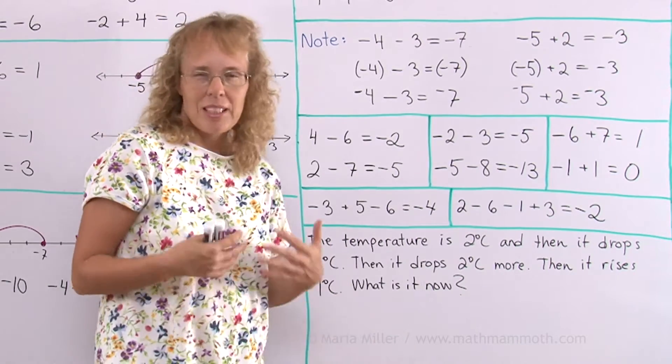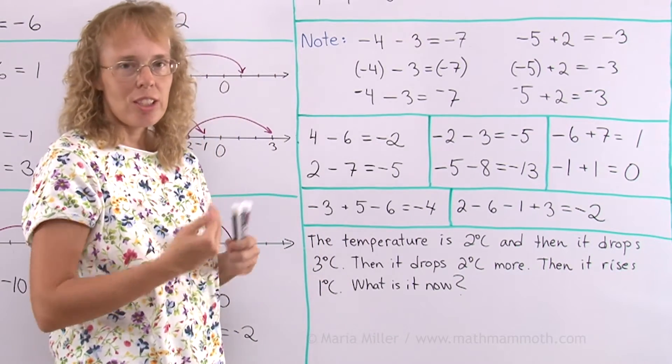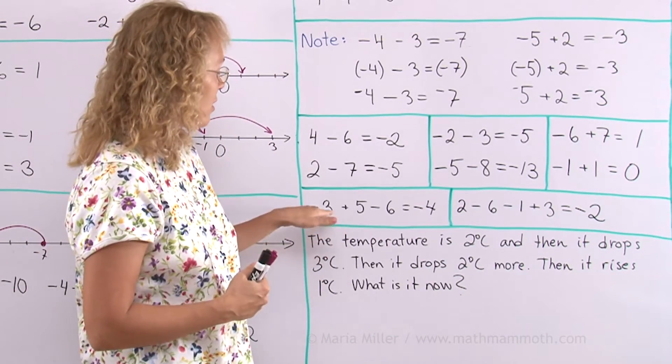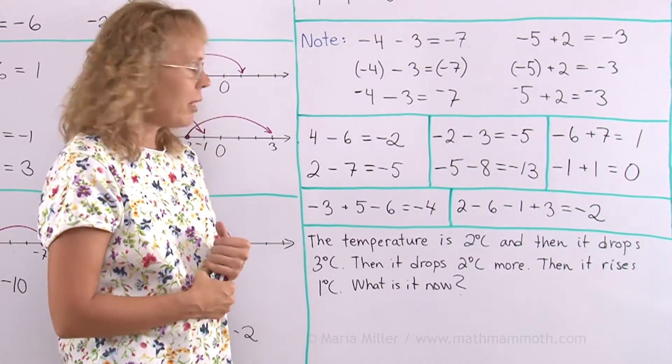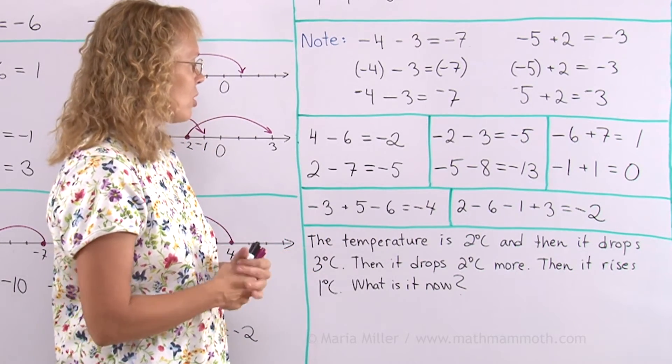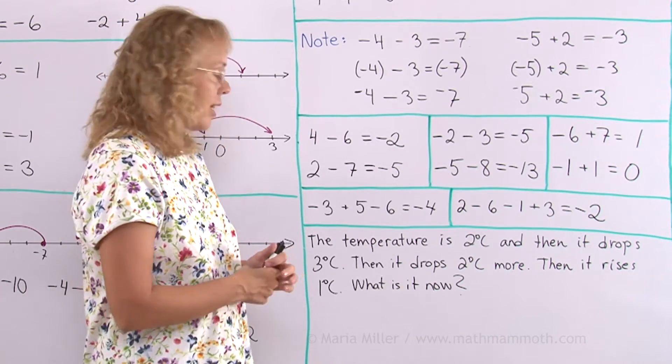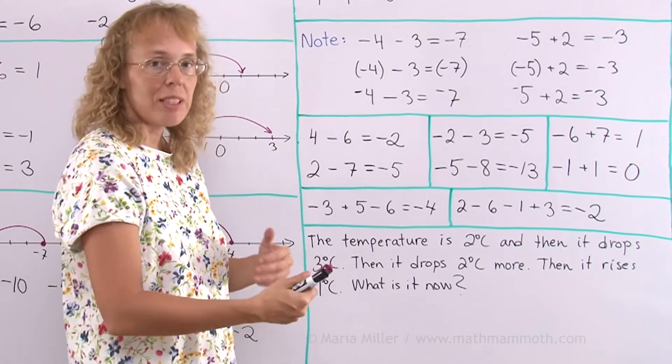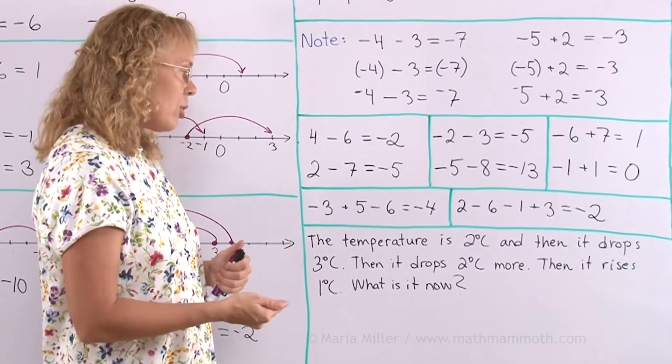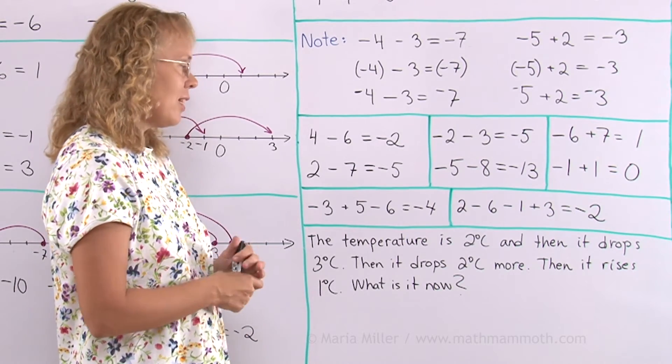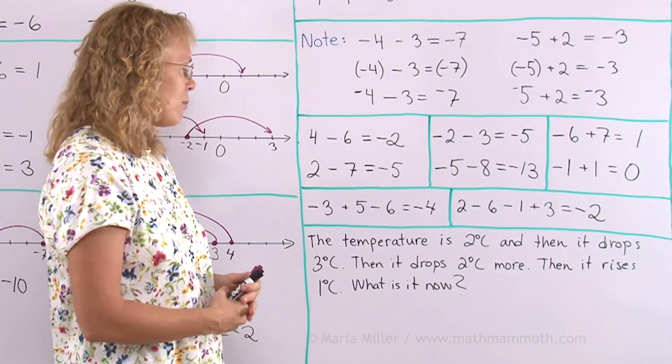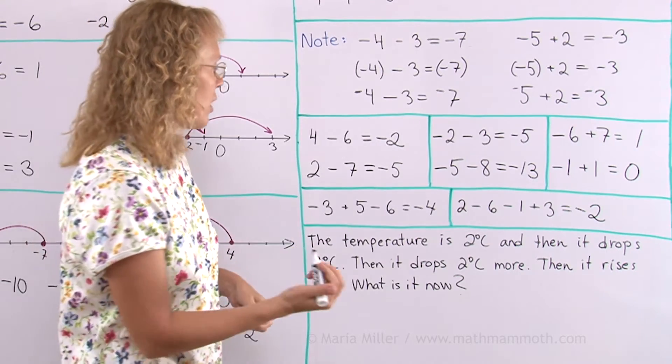Lastly here is a little situation with temperature changing. And we will write an addition subtraction sentence to match it. The temperature is 2 degrees Celsius. And then it drops 3 degrees. That's like the movement down, movement towards the left. Then it drops 2 degrees more. And then it rises 1 degree. What is it now?